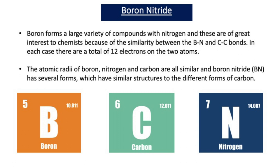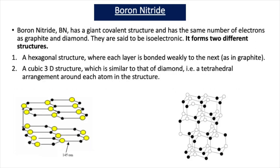We say that they are isoelectronic because they have the same number of electrons. The atomic radii of boron, nitrogen and carbon are all similar. Boron nitride, BN, has several forms which have similar structures to the different forms of carbon. Both have giant covalent structures, the same as diamond and graphite, and as mentioned they have the same number of electrons as diamond and graphite and are said to be isoelectronic.